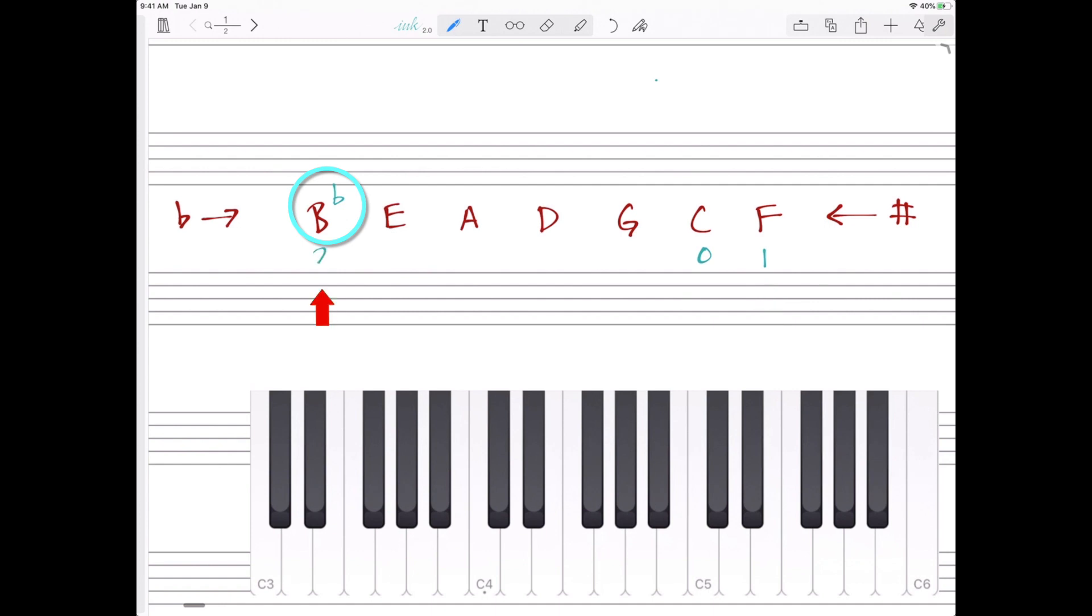The key of B flat has two flats. It has the B flat, but it also has E flat. The key of E flat has three flats. So we have B flat, E flat, and A flat.